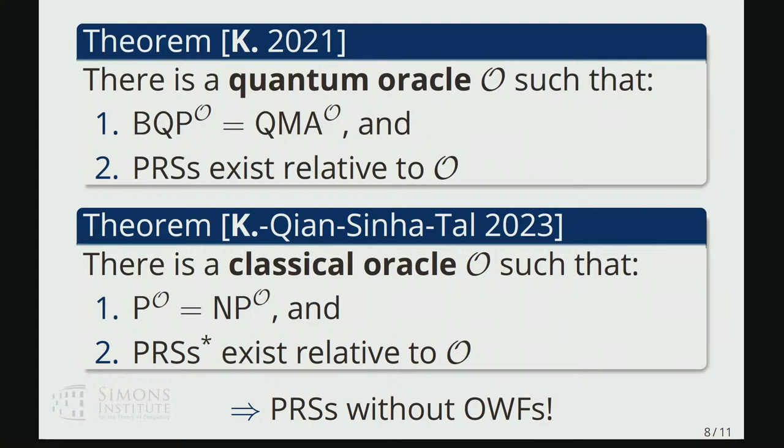in the more standard classical black box setting, we can construct a black box world where P is equal to NP, and yet, nevertheless, you still have pseudorandom states. And hence,